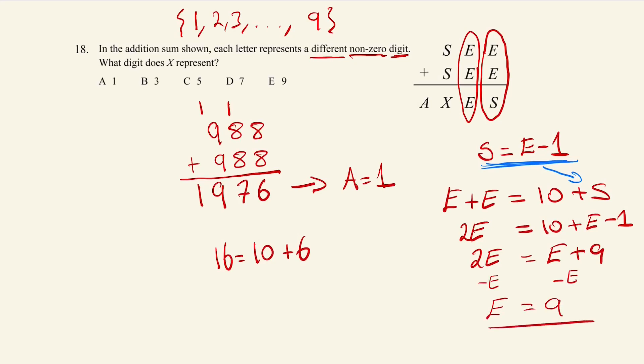So now we know that E is nine. We know that S then is going to be eight, because from this blue equation over here, S is E take away one. And now we've figured out S and E and we already know what A is, we can now figure out what X is.